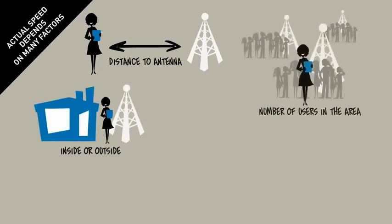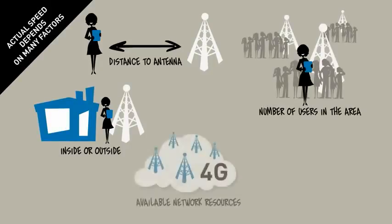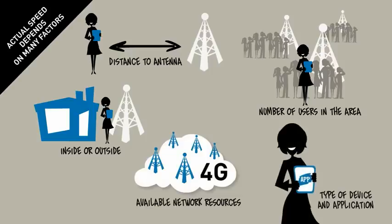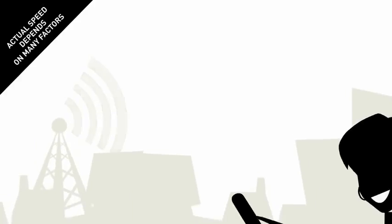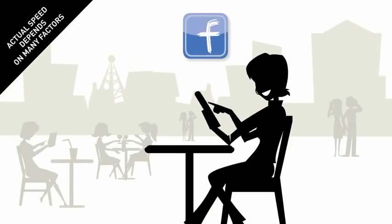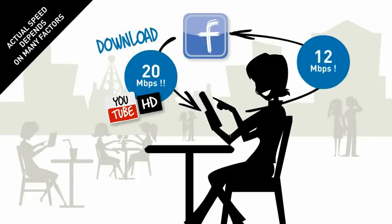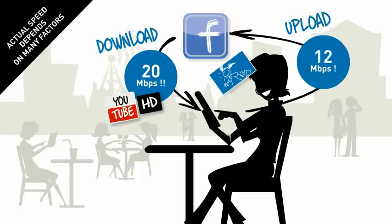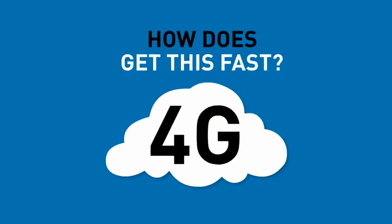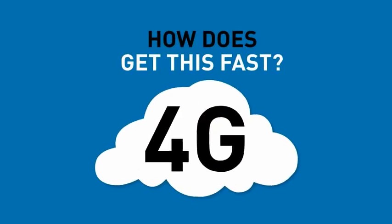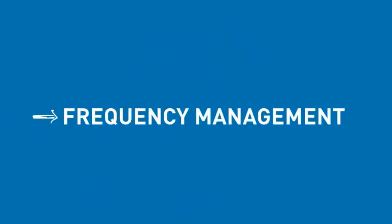Actual speed is influenced by many factors: your distance from the antenna, whether you're in a building or outside, the number of users in your area, the network resources available, your type of device, and the application you're using. Under normal conditions you will still reach average speeds of around 20 megabits per second for downloads and 12 megabits per second for uploads. So how does 4G get this fast?